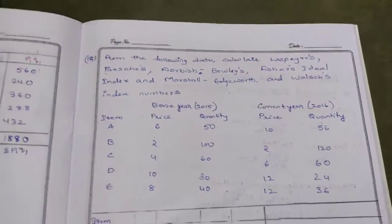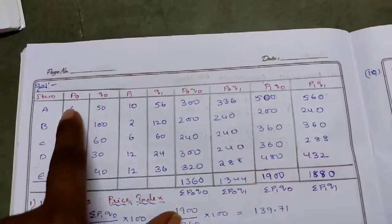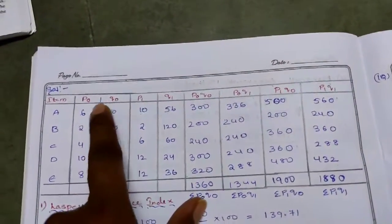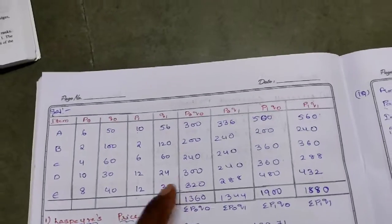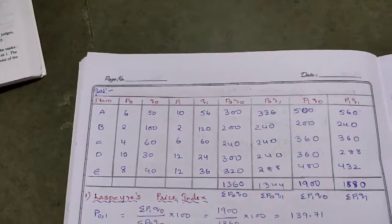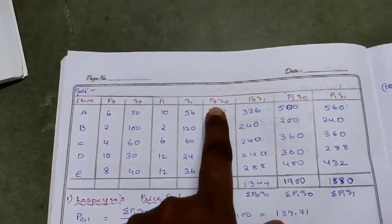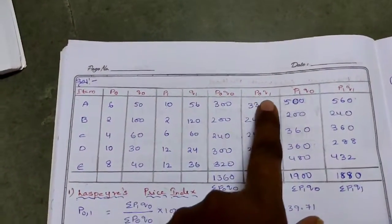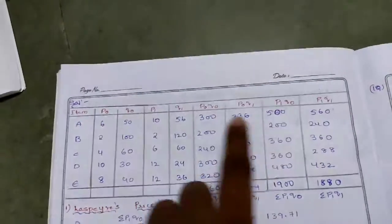For the solution, we set up a table with items, P0, Q0, P1, Q1 from the question — these are the first four columns. Then we calculate additional columns: P0Q0, P0Q1, P1Q0, and P1Q1. Totally 9 columns we have to take.